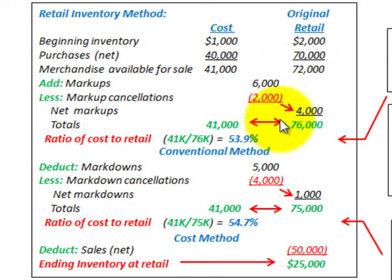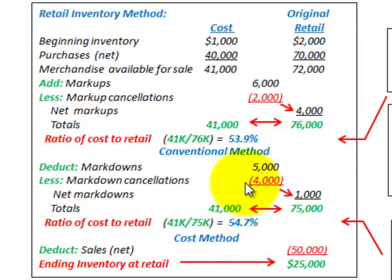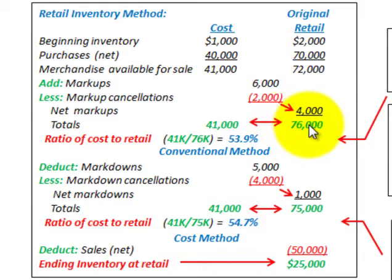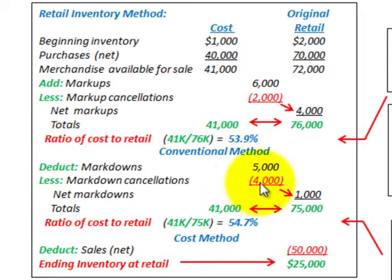We come up with a subtotal amount, and we're doing this because we'll need to divide it out between the conventional method and the cost method. Our merchandise available for sale was $72,000 plus net markups of $4,000 gives us a subtotal of $76,000. Then we consider our markdowns: $5,000 in markdowns less markdown cancellations of $4,000 gives us net markdowns of $1,000.